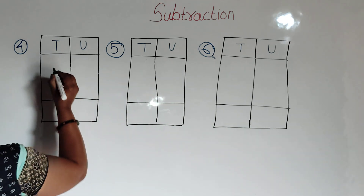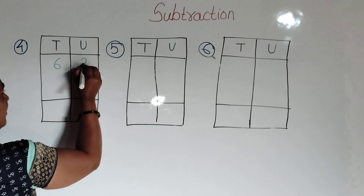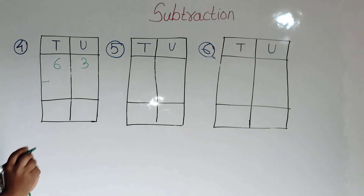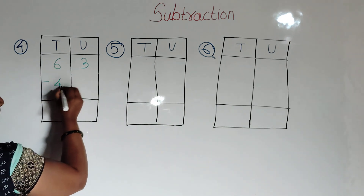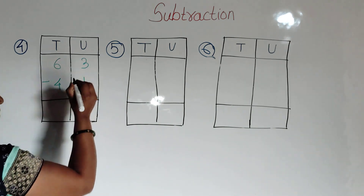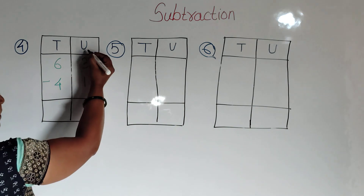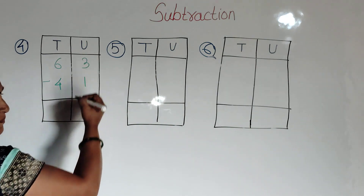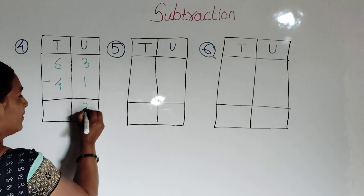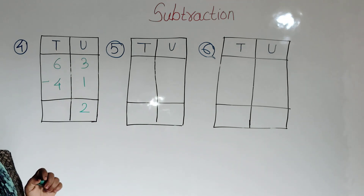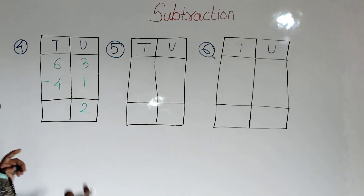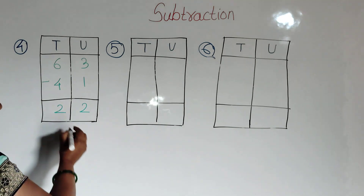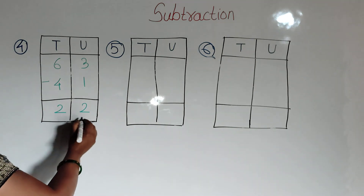63 minus 41. First, units place: 3 minus 1 is equal to 2. So the answer is 22.